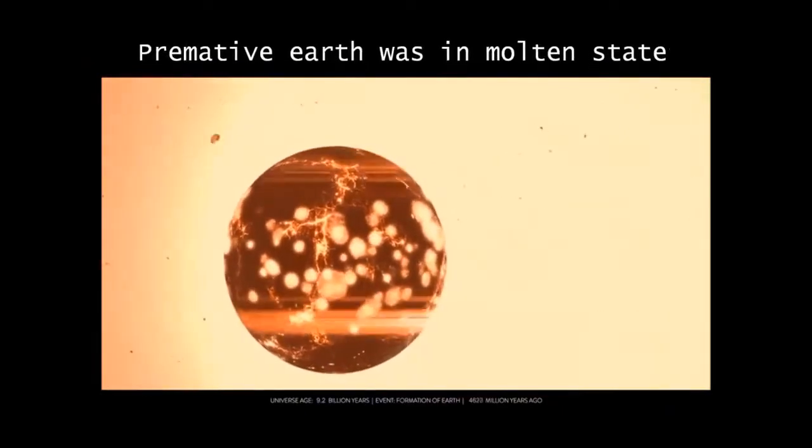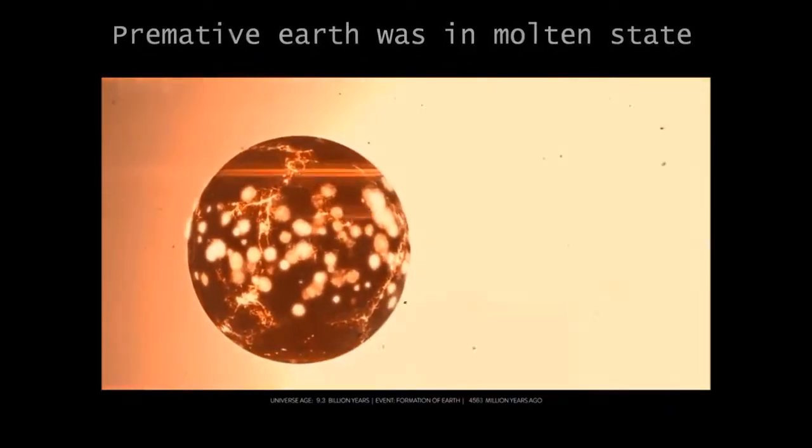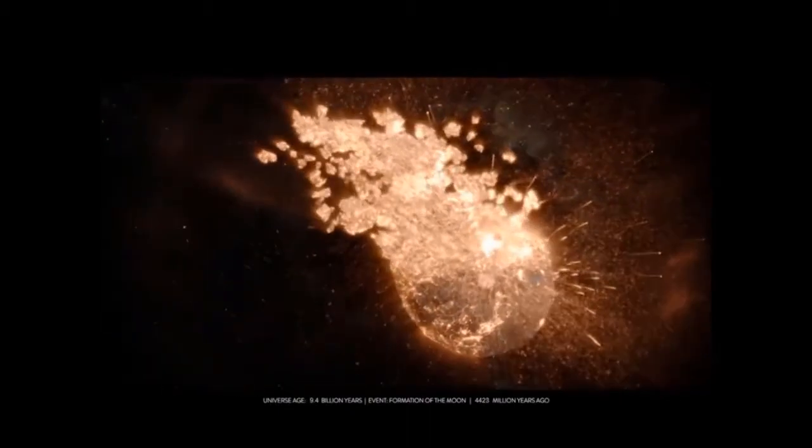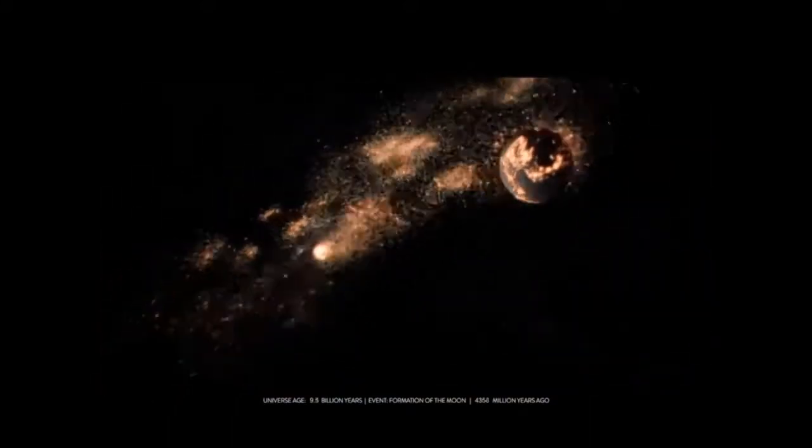Debris left over from the formation of the solar system collided with Earth. The great impact, called the Splat Theory, describes how the separation of mass from the Earth gave birth to the Moon.